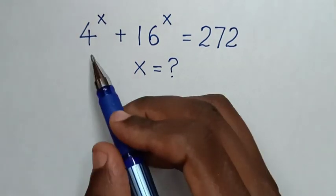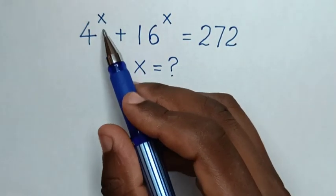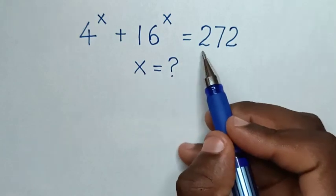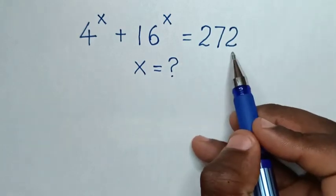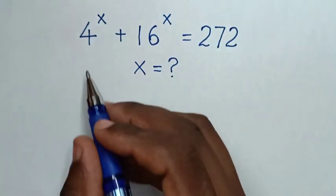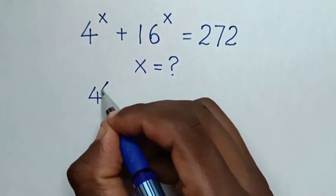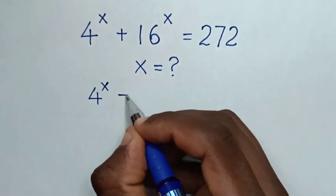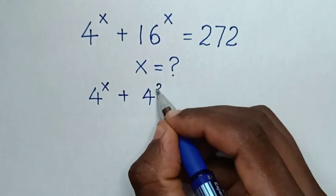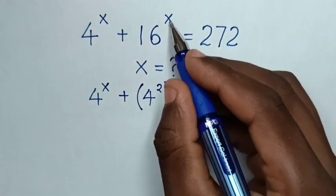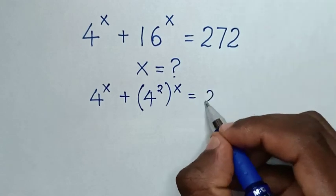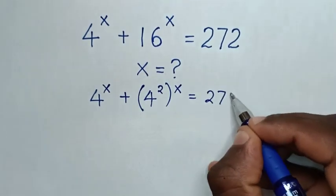Hello! How to solve 4 power x plus 16 power x is equal to 272, to find the value of x. So here, 16 is the same as 4 squared, so 16 power x is 4 squared power x, which equals 272.